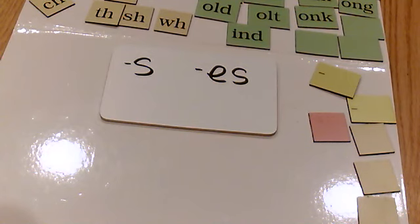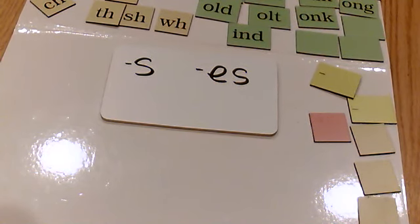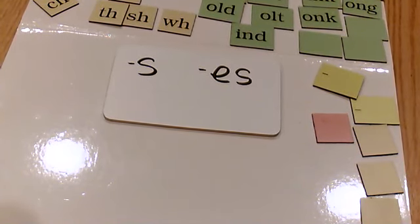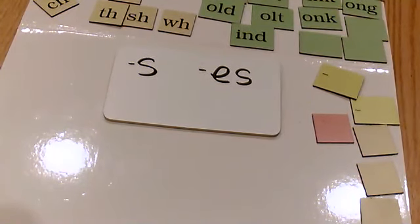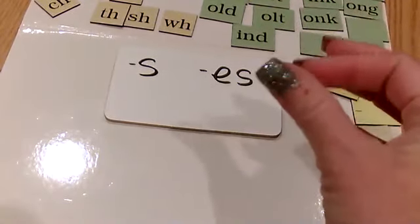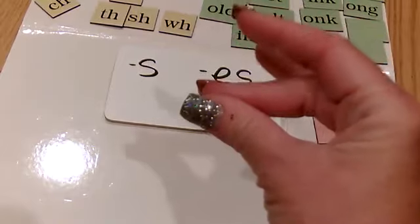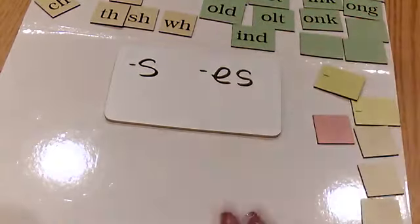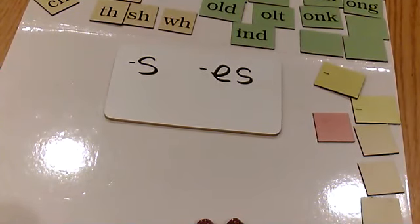Now what I want you to do is write the word clips. We would say clip, clips: c-l-i-p, add suffix -s. Write down the word clips.